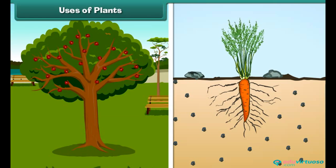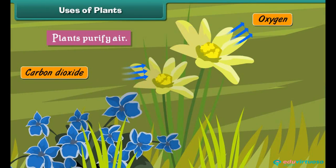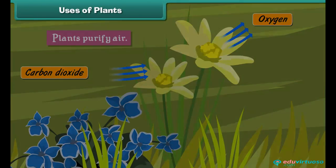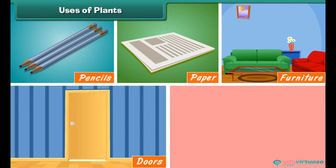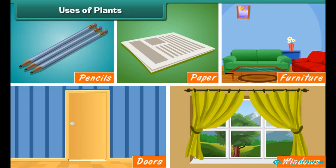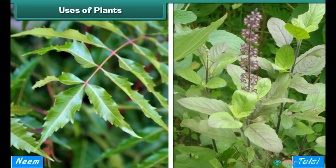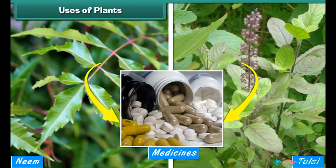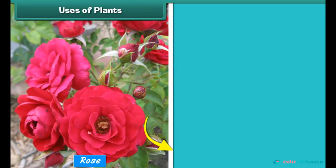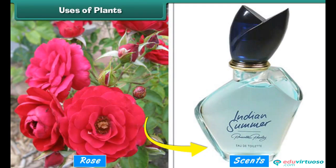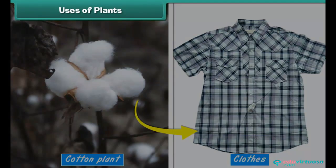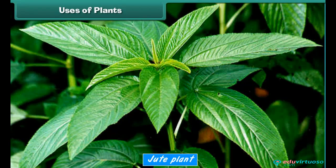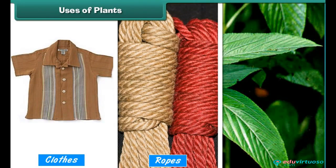Besides giving us food, plants are useful to us in many other ways. Plants purify air. They provide us wood for pencils, paper, furniture, and doors and windows of our houses. Some plants such as neem and tulsi are used to make medicines. Some plants such as the rose are used in scents. The cotton plant gives us cotton which is used to make clothes. The jute plant gives us jute which is used to make clothes, ropes, and mats.